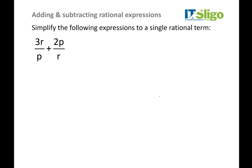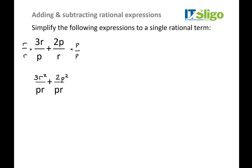Now for the fraction ones — the ones people don't like very much. First, we want to find a common denominator, which here is pr. We need to multiply each fraction above and below: on the right-hand side we multiply by r, and on the left-hand side we multiply by p. This gives us 3r squared on top of one fraction and 2p squared on top of the other. Now they have a common denominator and we simply combine them. Don't be tempted to cancel p above and below — we'll cover proper cancellation in the next lecture.